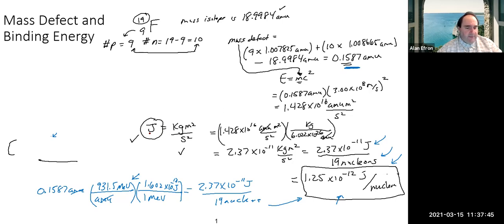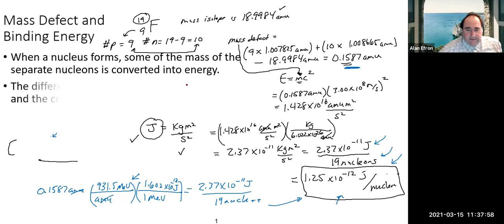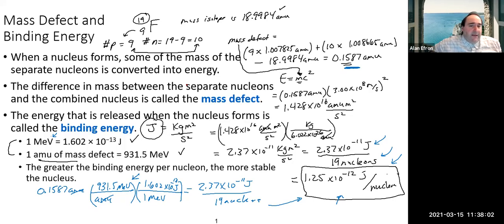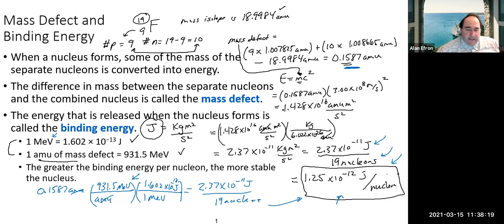We were talking about stability, fission, and nuclear binding energy. Nuclear binding energy is the energy difference that comes from the formation of the nucleus. There is a difference in the mass of the particles that make up the nucleus — sometimes called nucleons — and the actual mass of the nucleus or isotope itself. That difference is referred to as mass defect.